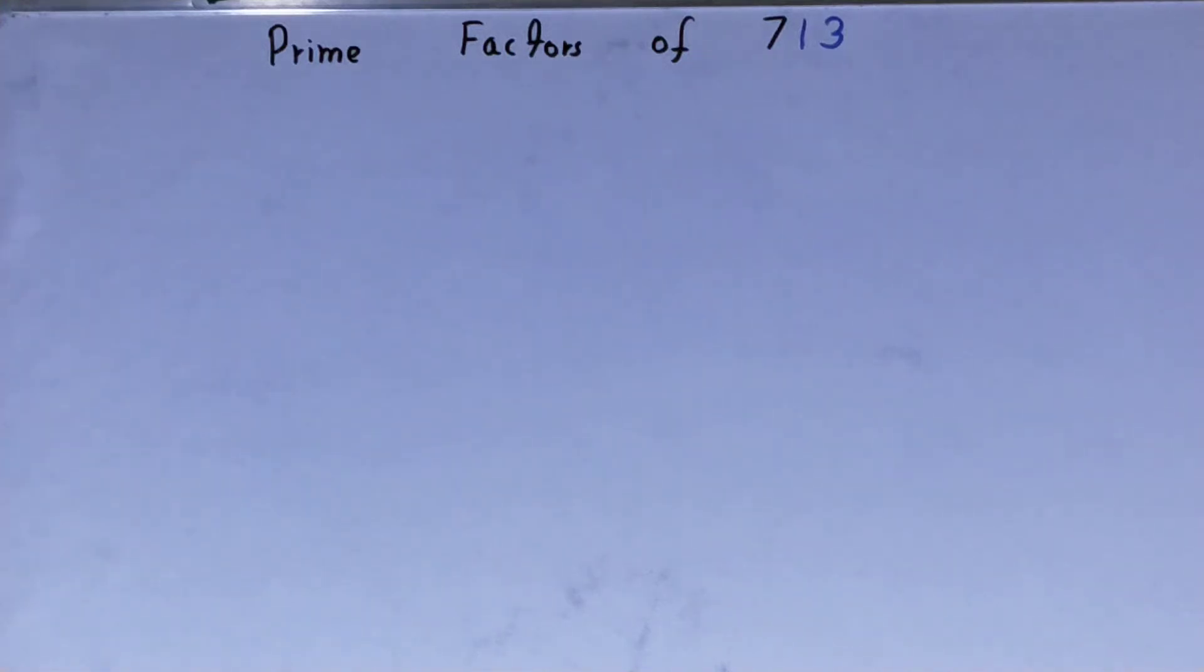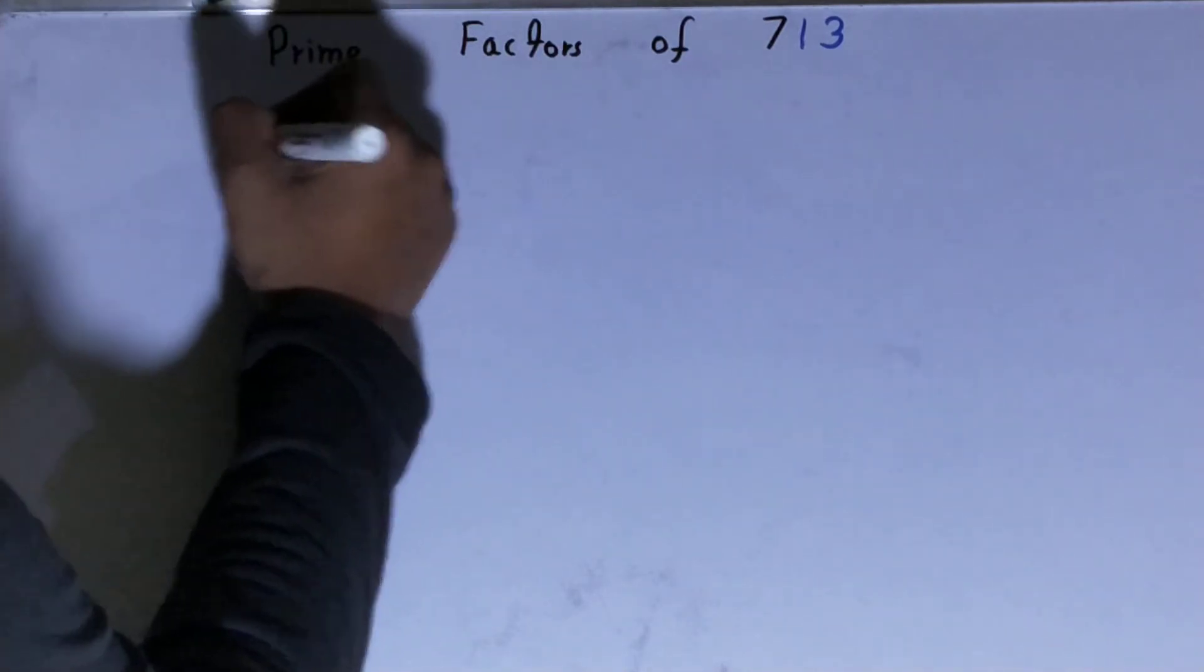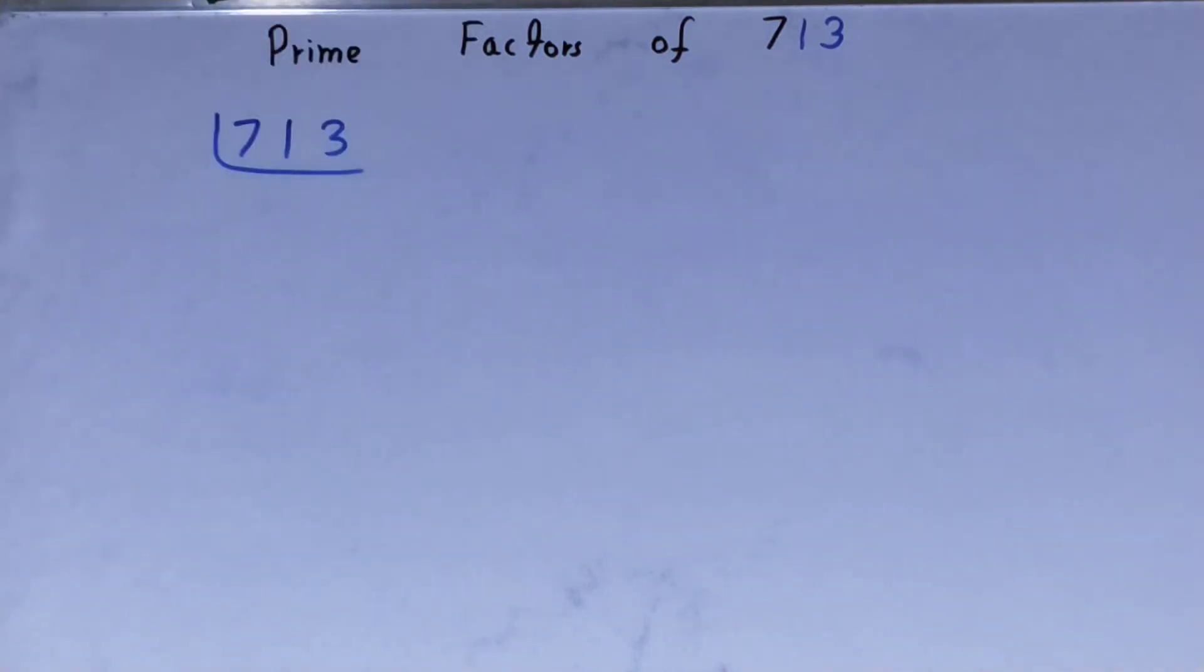Hello friends, and in this video I will be helping with the prime factors of the number 713. So let's start. To find out the prime factors of the number 713, you need to write the number like this. And before solving this any further, you must know what prime numbers are. So, prime numbers are numbers that are divisible by one and the number itself.